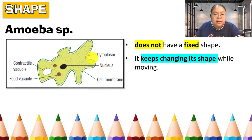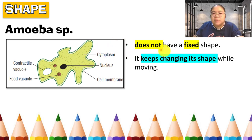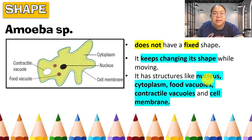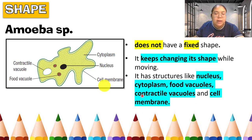Another type of protozoa is Amoeba. You can see the diagram — the shape is not fixed. We cannot say it has a definite shape because it keeps changing while moving. The outer extensions help the Amoeba move and as it moves, the shape changes. Amoeba still has a nucleus, cytoplasm, food vacuoles, contractile vacuoles, and a cell membrane — similar structures to Paramecium.